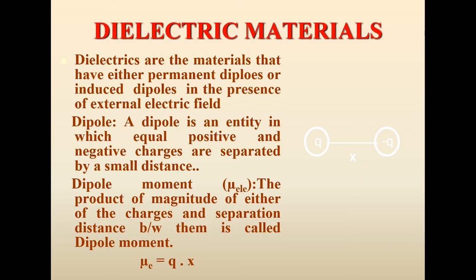A dipole is an entity in which equal positive and negative charges are separated by a small distance. Looking at the figure, these are charges +q and -q separated by a distance x — this entity is known as a dipole. 'Di' stands for two; it consists of two charges +q and -q separated by distance x. If the distance is zero, you cannot call it a dipole.